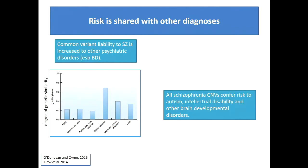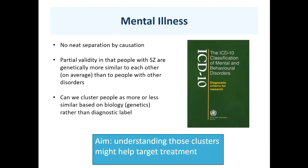If you take those CNVs - the holes in chromosomes I was talking about - every single one that increases risk of schizophrenia also increases risk of intellectual disability, and most of them increase risk of autism as well. So the bottom line is that when you look from the biological genetic perspective, there is no neat separation between the psychiatric diagnoses. That doesn't mean there's no validity at all in psychiatric diagnosis - people with schizophrenia are more similar to each other than to someone with autism - so there are degrees of relationship, but it's not a clear-cut biological validity.